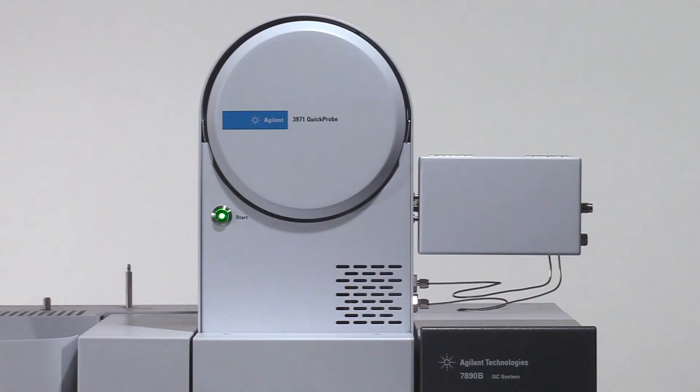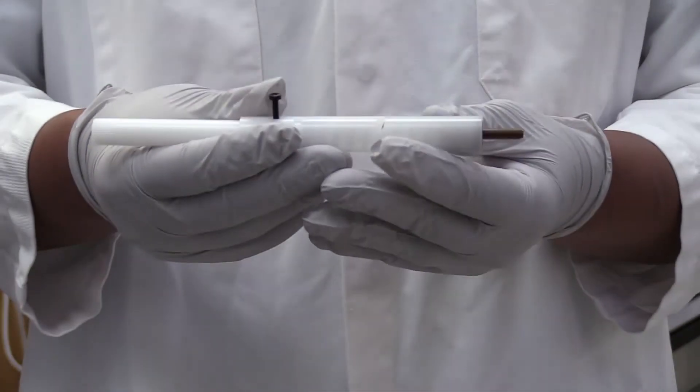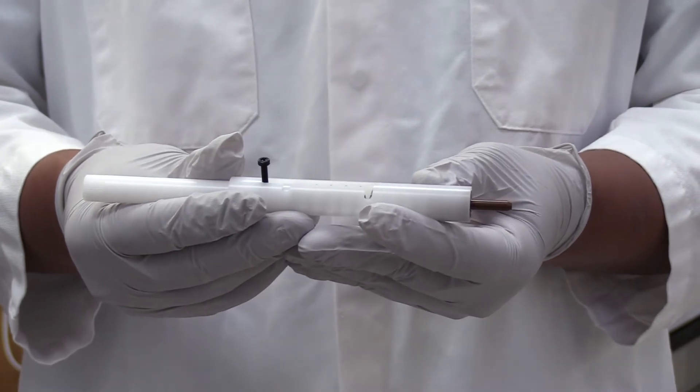Let me show you how simple it is to use QuickProbe. The green light on the start switch lets me know that the system is ready for a sample injection. Here is the Agilent glass probe and probe holder.